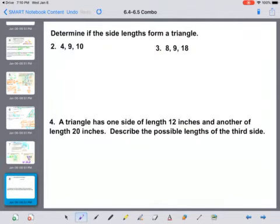And we can use that to determine if the side lengths form a triangle, because when you add up two sides, they must always be greater than the third. So 4 plus 9 has to be greater than 10.